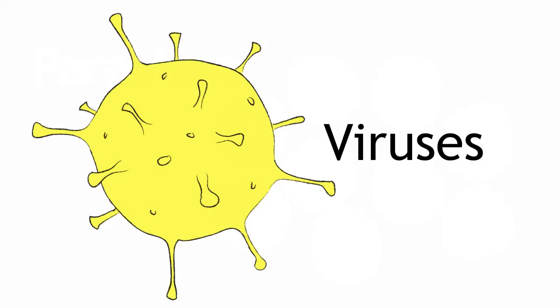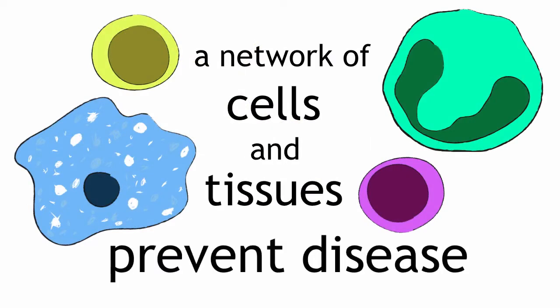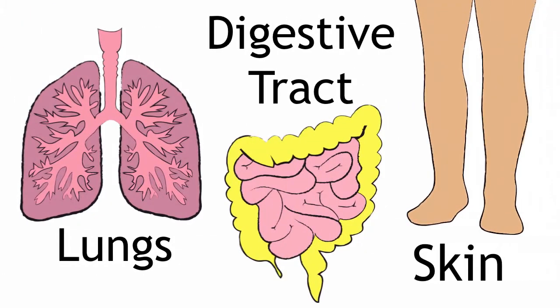The immune system comprises a network of cells and immune tissues that work together to prevent the development of disease. All parts of the body that interface with the environment, such as the lungs, the digestive tract, and the skin, have to be prepared to protect the body from infection.